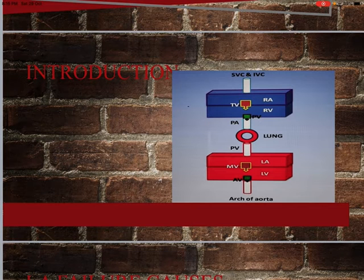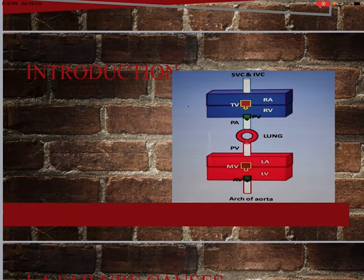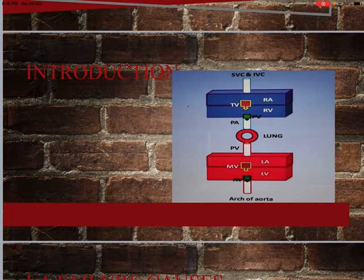Now we should know the hemodynamics of mitral stenosis. The mitral valve is calcified, fibrosed, deformed, or stenosed. In MS, the mitral valve opens incompletely. If it opens incompletely, the left atrial pressure will increase. This chronic increase in left atrial pressure will ultimately lead to left atrial dilatation and hypertrophy.